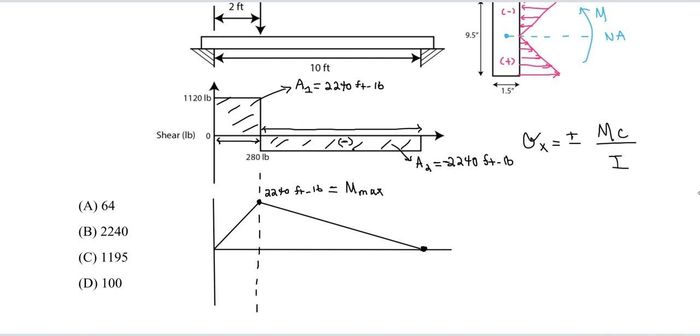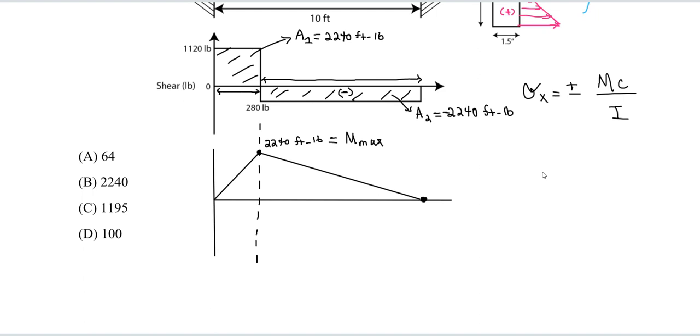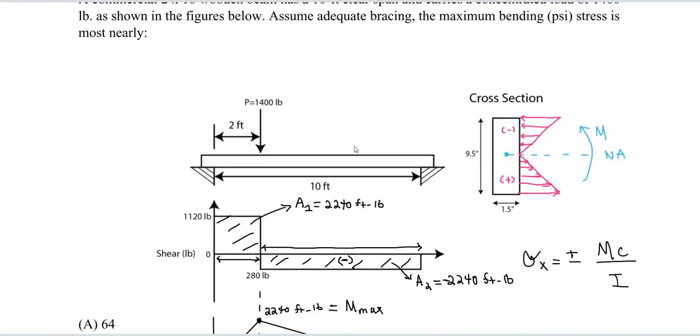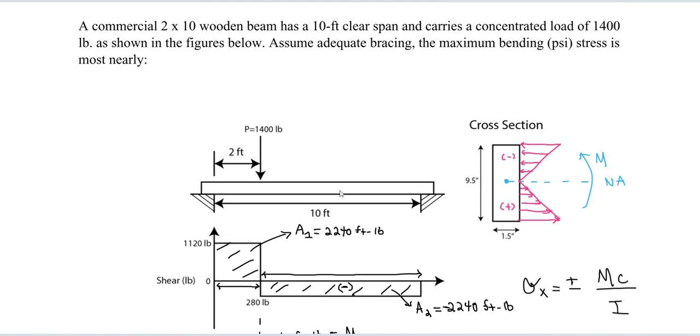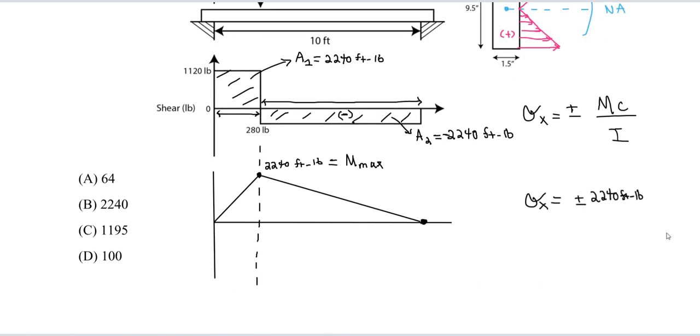After having that maximum moment, we can go back to this equation. Our maximum bending stress is going to be plus or minus the maximum moment, 2,240 foot pounds. We need this in inch pounds because we want the final answer in psi, pounds per inches squared. We need to take out that foot. We know 1 foot is 12 inches, so you can simply multiply by 12. So that's this portion.